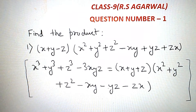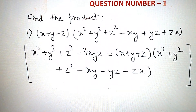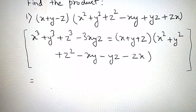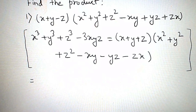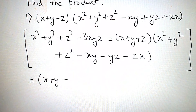अब यहाँ पर question number 1 इसी formula पर based है। तो इसको हम लिखेंगे — x² + y² + z², और यहाँ पर लिखेंगे x + y + (minus z), क्योंकि question में z की जगह minus z है।